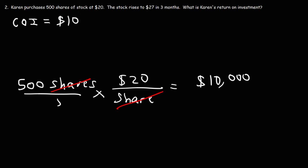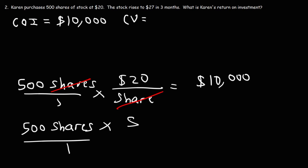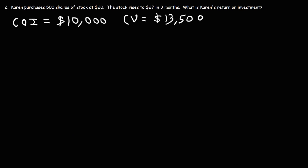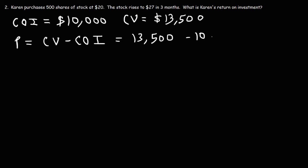So the cost of the investment is 500 times 20, which means she invested $10,000 into this company. Now let's see what the current value of her stock is. She still owns 500 shares and now the price of each share is $27. So the current value of her investment is 500 times 27, which is $13,500. So if she sells it at that price, we can now calculate the profit. The profit is the current value minus the cost of the investment: $13,500 minus $10,000, which yields a net profit of $3,500.